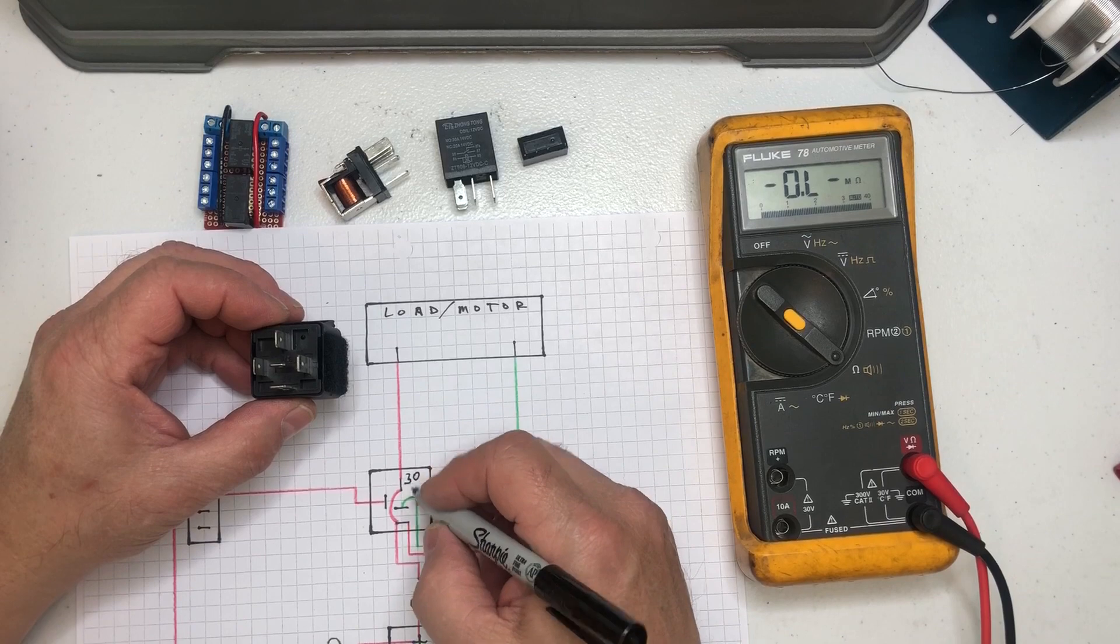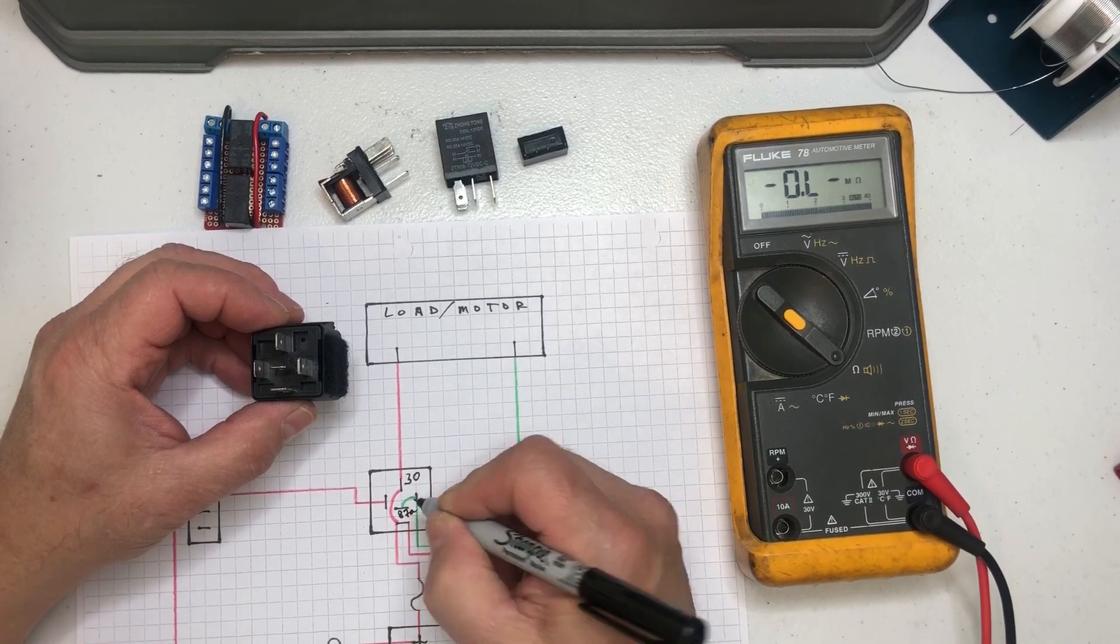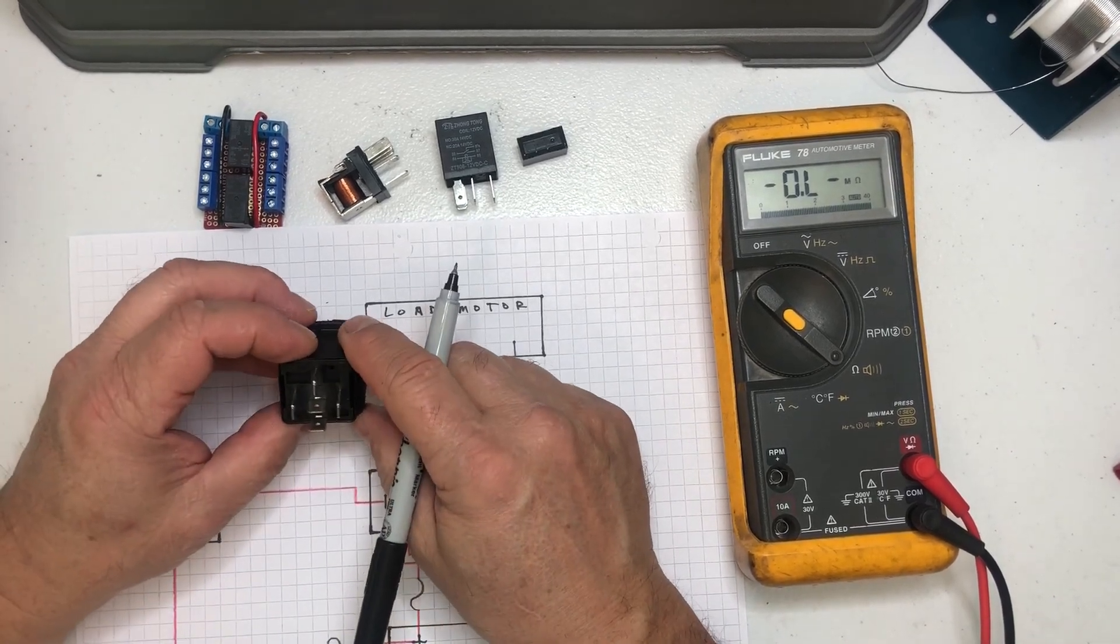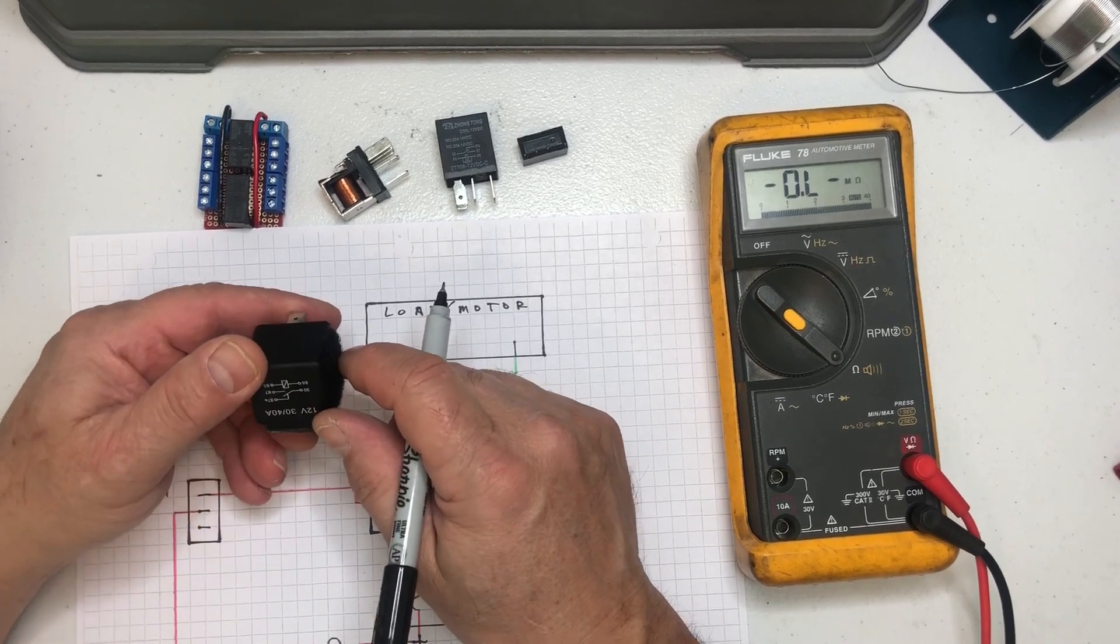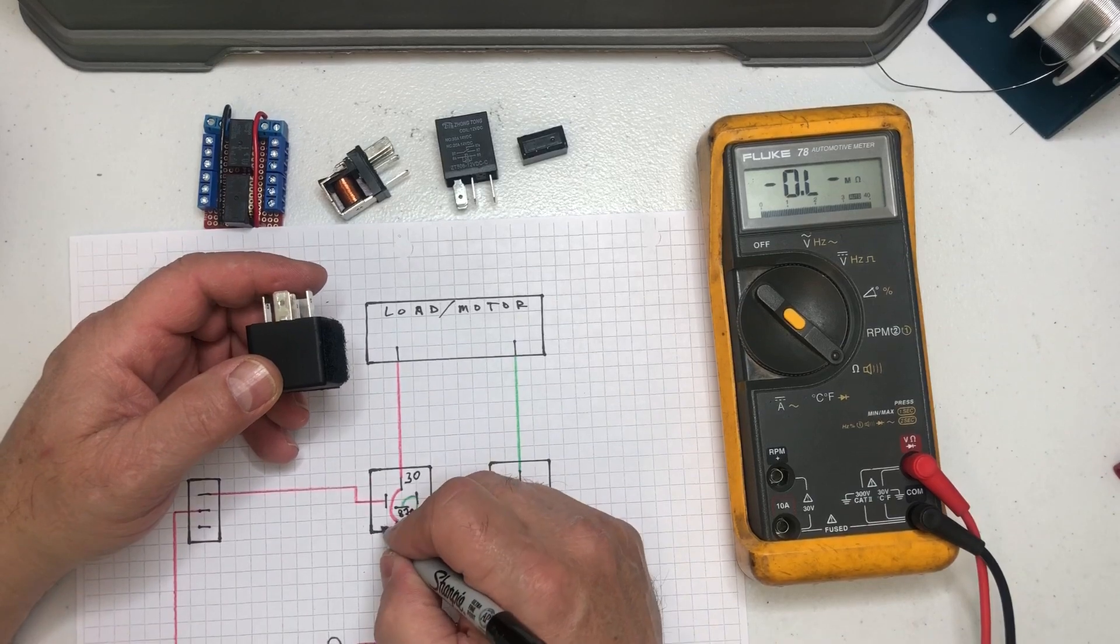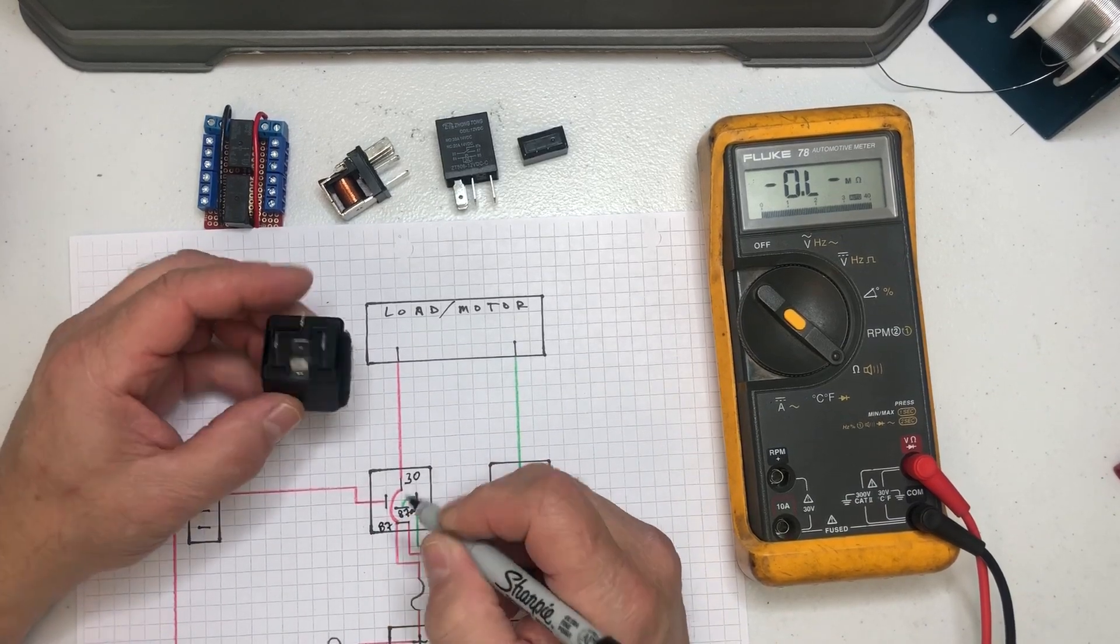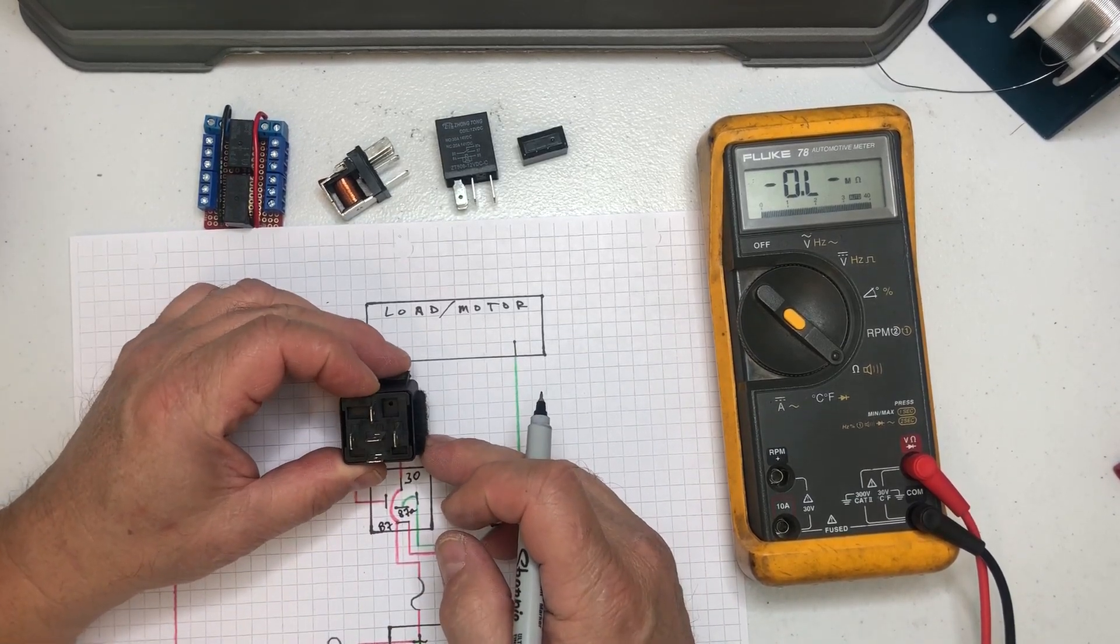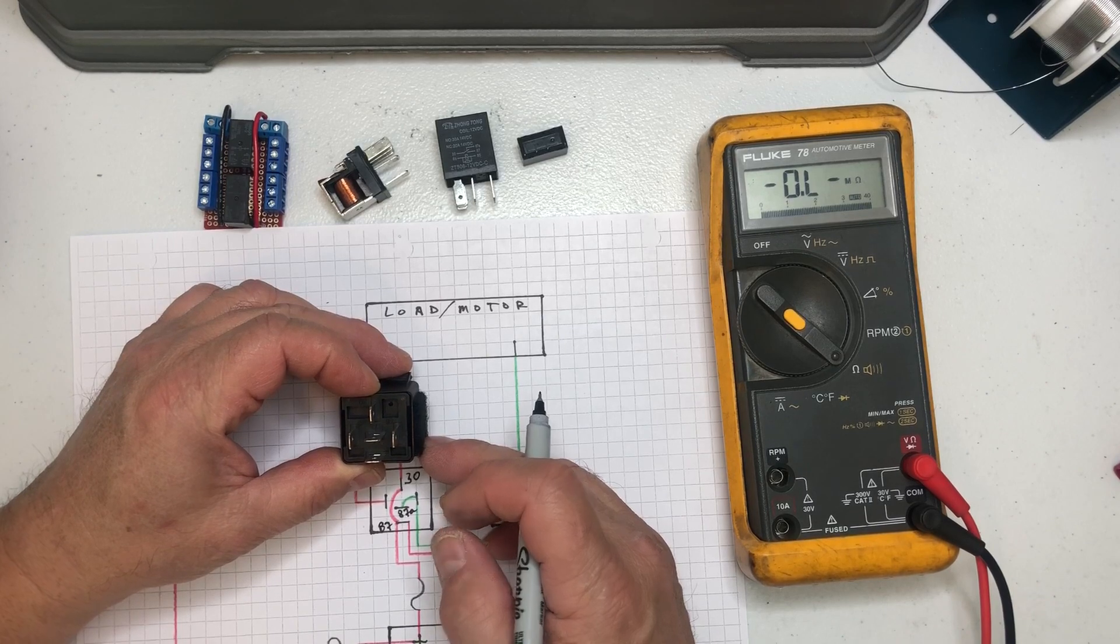Okay, so this middle one here is 87A and the other one is just 87. So this one here is 87A. Then your coils are 86 and 85.